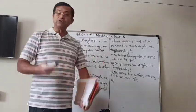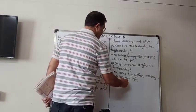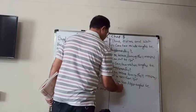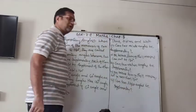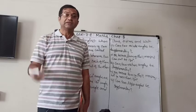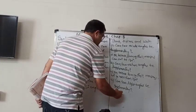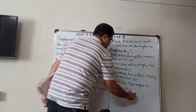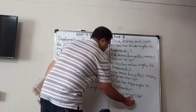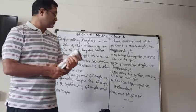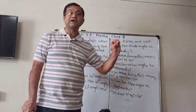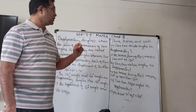Third question: can two right angles be supplementary? Right angles means 90 degrees each, so 90 plus 90 is 180. The answer is yes, because 90 degrees plus 90 degrees becomes 180 degrees, making them supplementary. So two acute angles cannot be supplementary, two obtuse angles also cannot be supplementary, but two right angles are always supplementary. Here we are going to finish today's session.